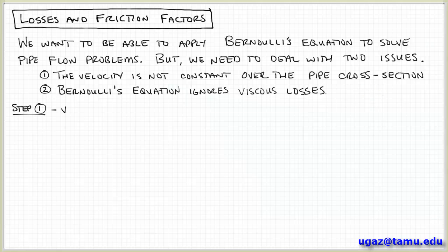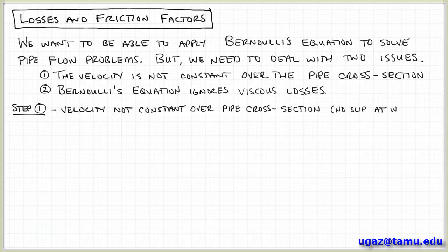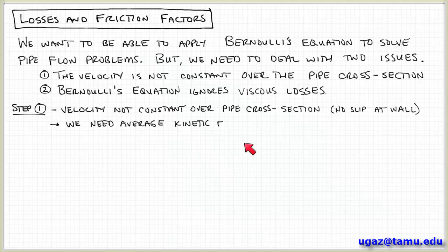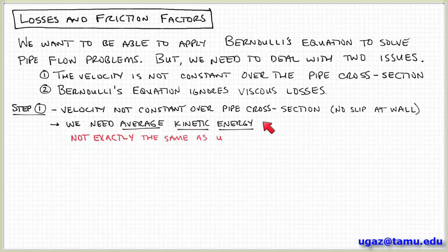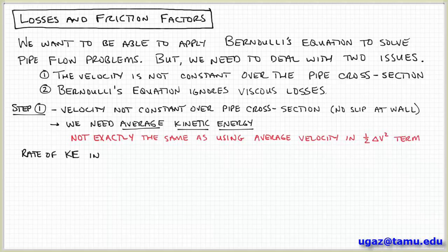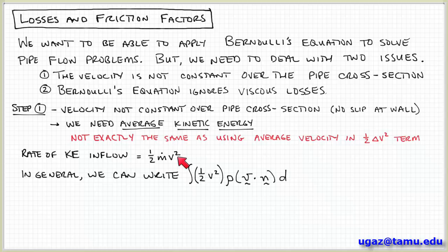Let's start and address the first issue — the fact that the velocity is not constant over the cross-section of the pipe. Why is this an issue? If you look at the kinetic energy term in Bernoulli's equation, it has the form one-half mv squared. You might think we can just substitute the average velocity, writing one-half mv_average squared. But that's not exactly true. We need to actually average the kinetic energy as a whole — find an expression for the average of the entire quantity one-half mv squared, not just the average velocity itself. The two expressions are not explicitly equivalent.